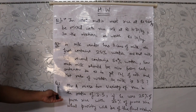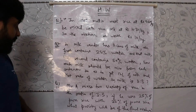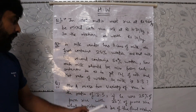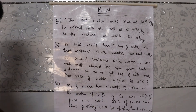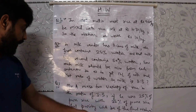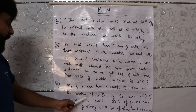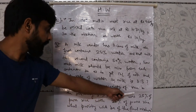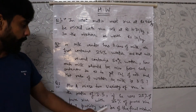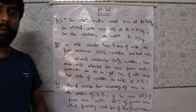Question number 3 says: Mr. A mixed 2 varieties of rice in the ratio of 3 to 5. If he uses 25% purity of variety 1 rice with 35% purity of variety 2 rice, then what purity will the final mixture have?